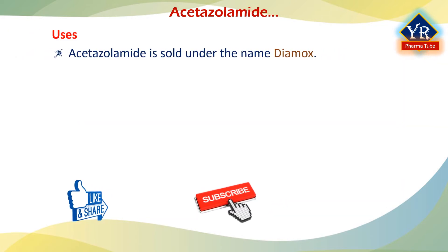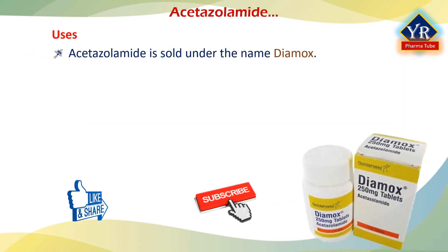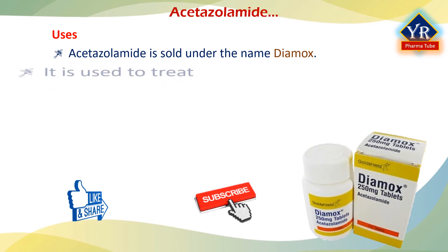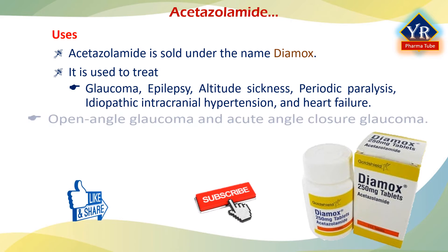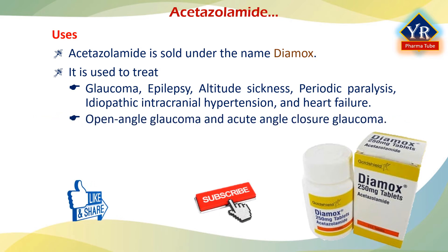Acetazolamide is sold under the trade name Diamox. It is a medication used to treat glaucoma, epilepsy, altitude sickness, periodic paralysis, idiopathic intracranial hypertension, and heart failure. It may be used long-term for the treatment of open-angle glaucoma and short-term for acute angle closure glaucoma until surgery can be carried out. It is taken by mouth or injection into a vein.